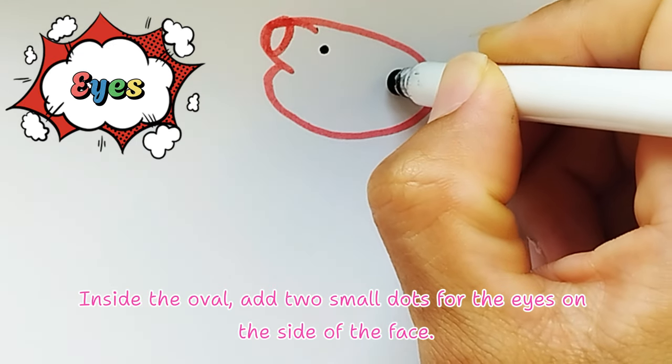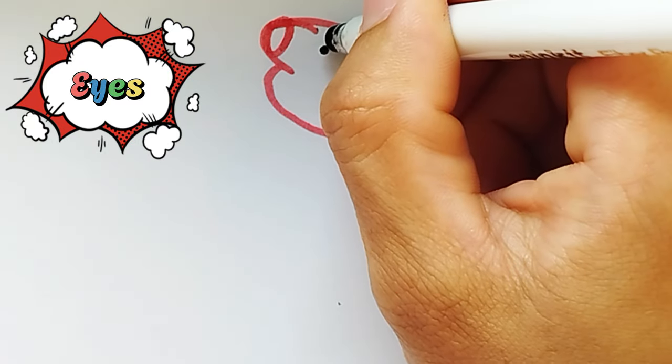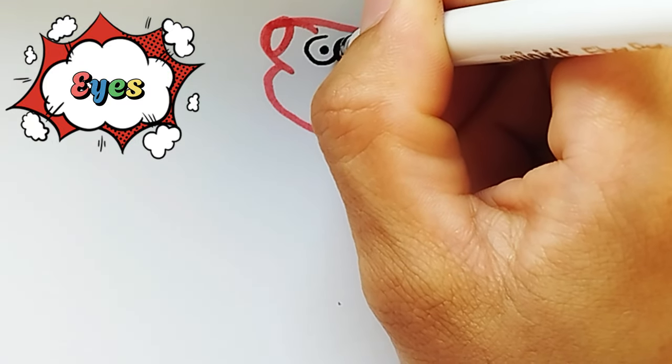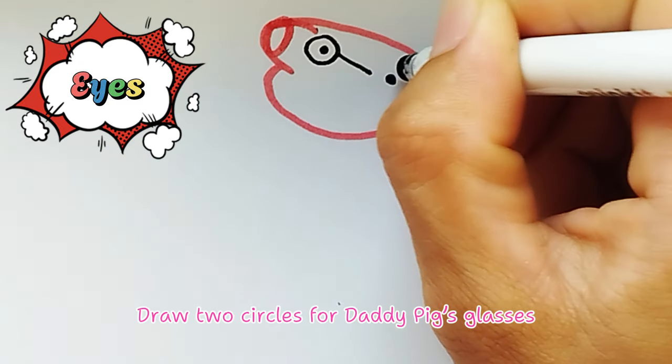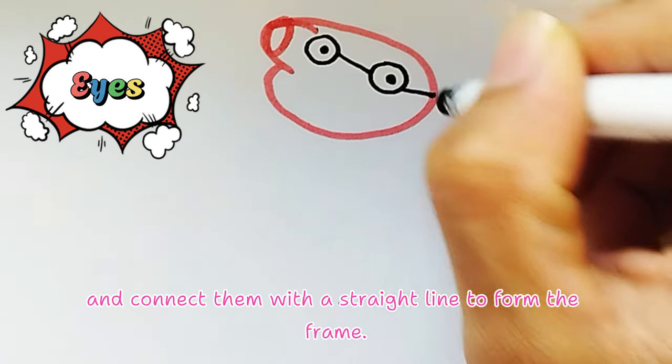Eyes. Inside the oval, add two small dots for the eyes on the side of the face. Add the glasses. Draw two circles for Daddy Pig's glasses and connect them with a straight line to form the frame.